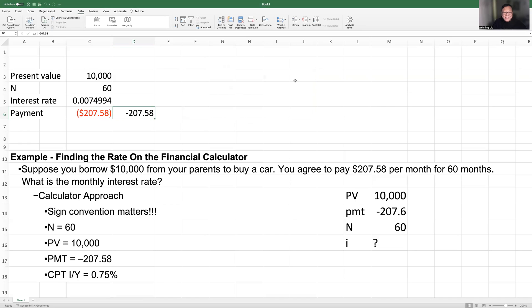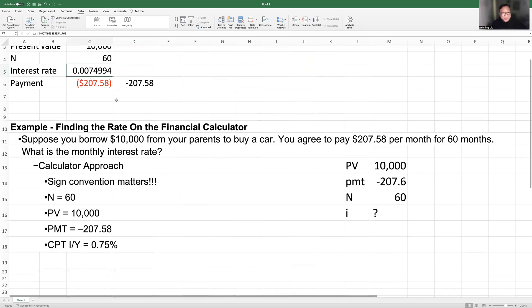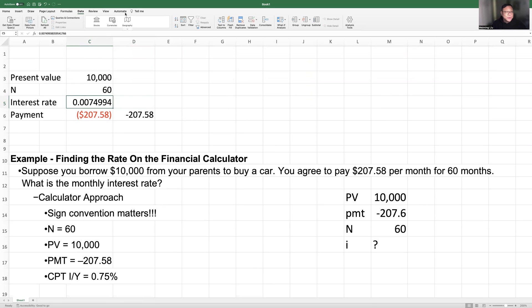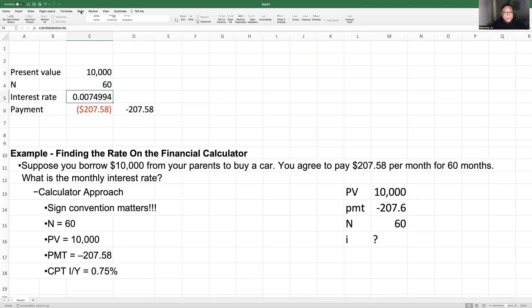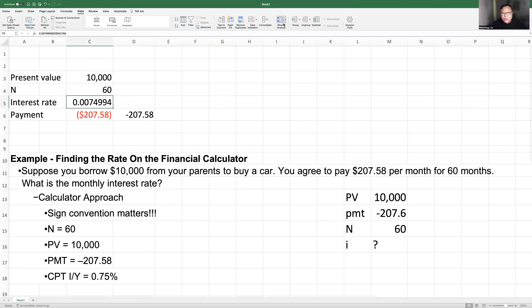See the computer is very smart. So right away, the computer tells me that the interest rate should be 0.0074994. And this number is exactly as what you will get from the financial calculator. So just want to introduce this useful tool for you. So you go to, in Excel, you go to data. Go to what-if analysis. Click. Go to goal seek. So I hope you find this useful.